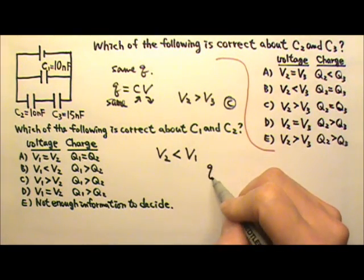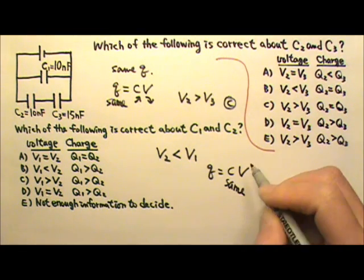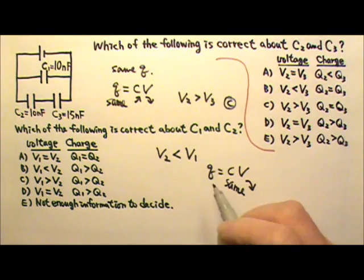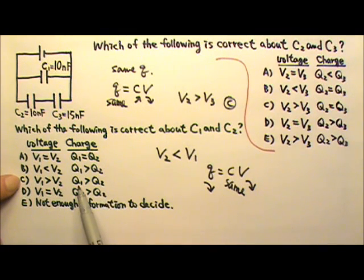And because Q equals Cv, they have the same capacitance. The one with the lower voltage must get less charge. So V2 is less than V1, and Q2 has to be less than Q1. So the answer is C.